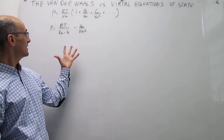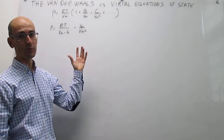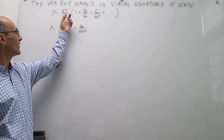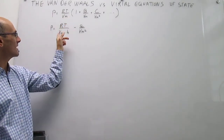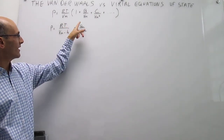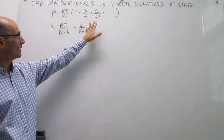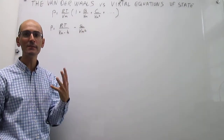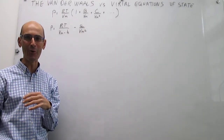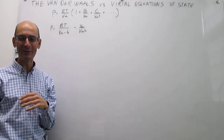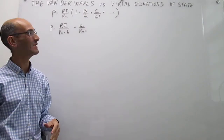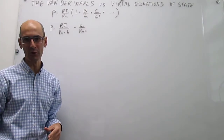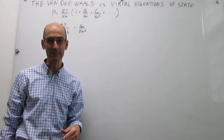Notice that in general the equations look quite similar — there are a number of common terms. You have RT over V_M throughout, and a V_M-squared term. There is significant hope to see a connection between these two expressions, and that's exactly what we're going to develop in this video.